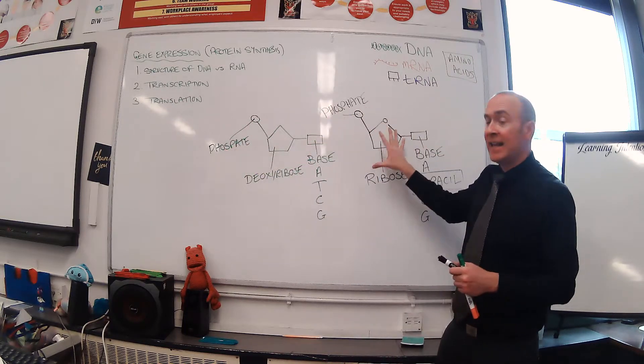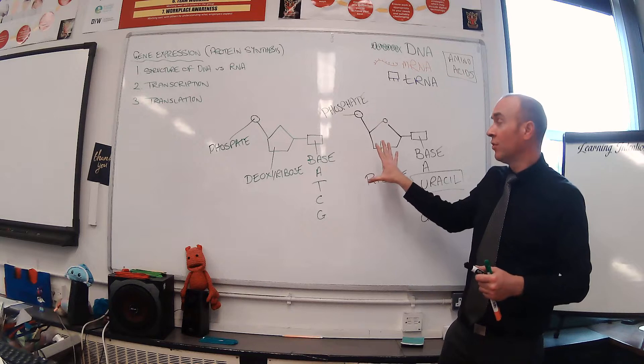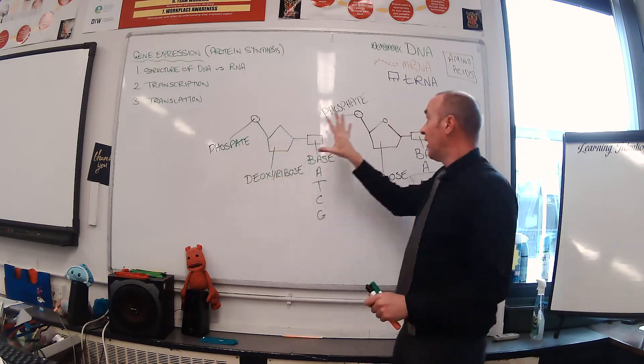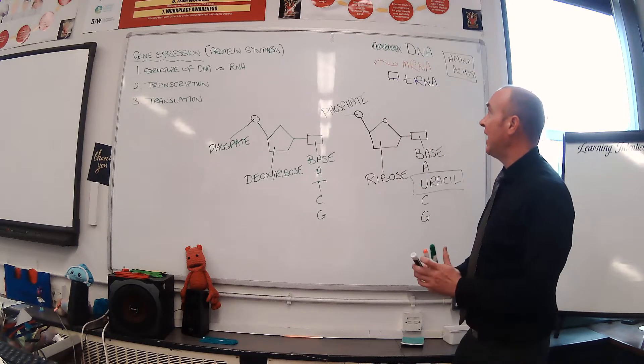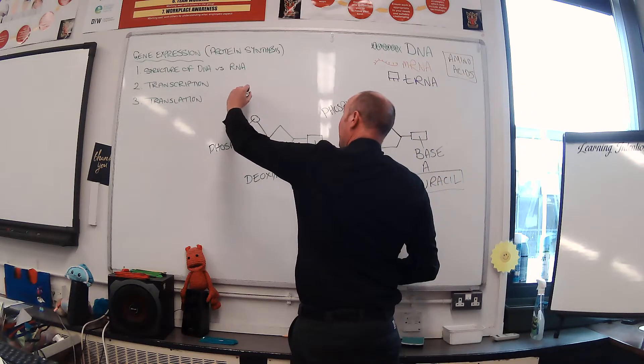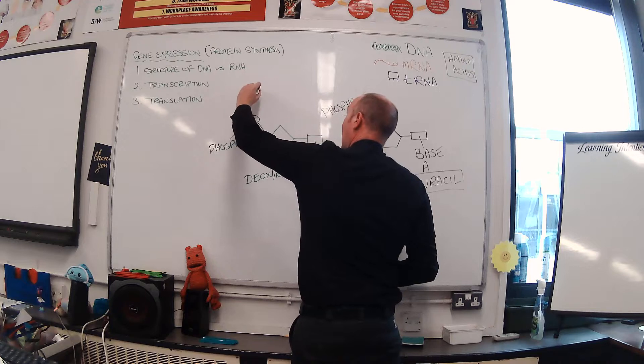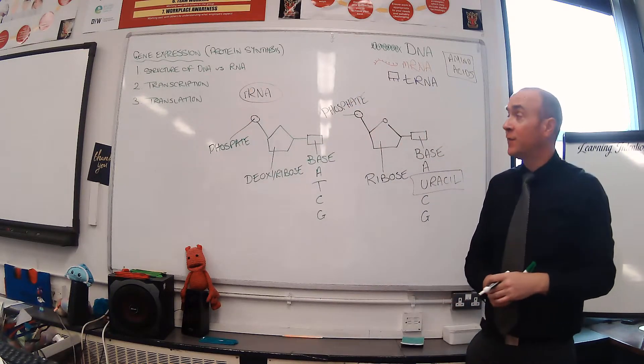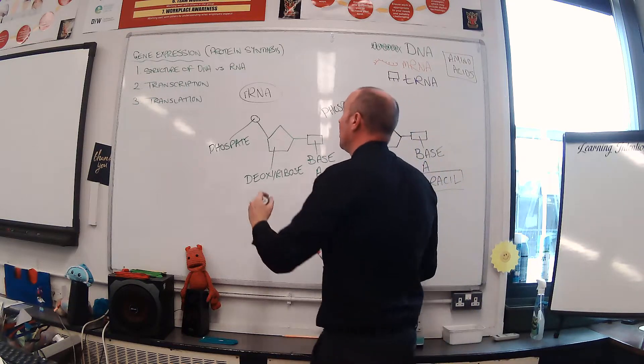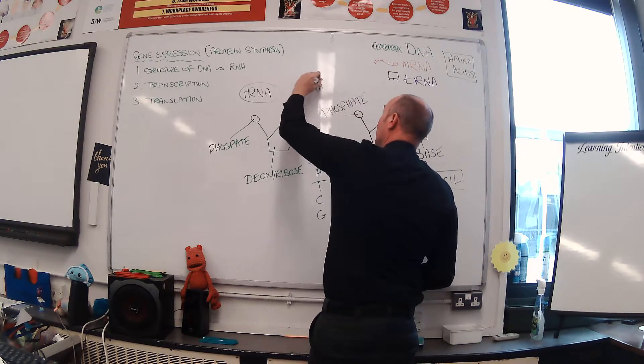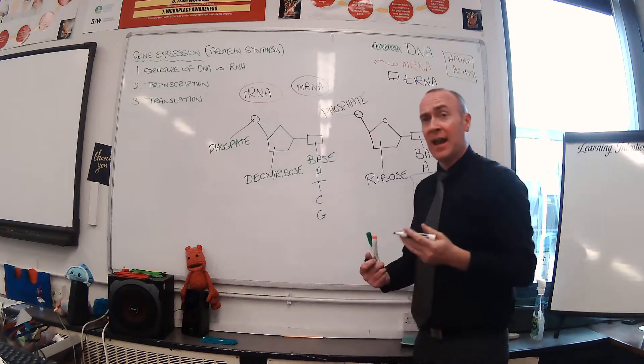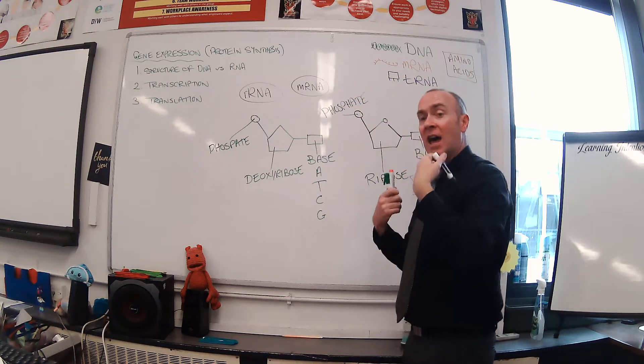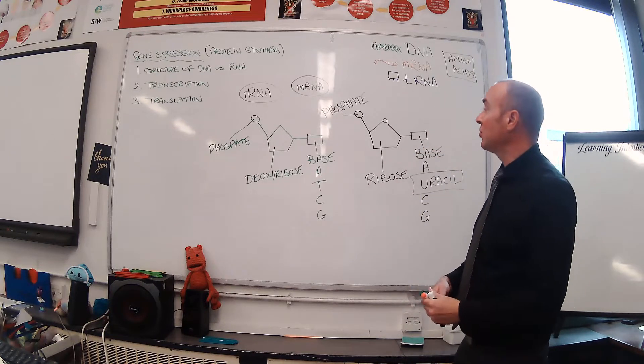A couple of other structural differences: DNA is a double stranded molecule, whereas RNA is always found as a single stranded molecule. There is only one type of DNA, but there are effectively three different types of RNA. First one, rRNA, is found as part of ribosomes.